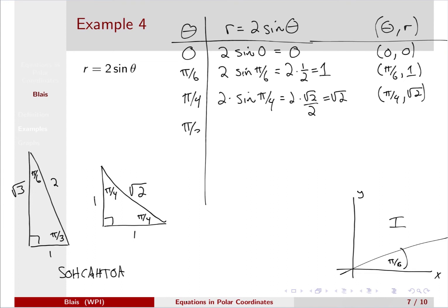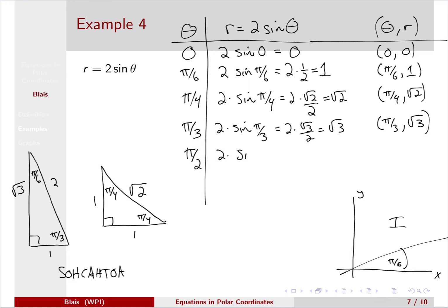For theta equals pi over 2: r is 2 times sine of pi over 2. Sine of pi over 2 is 1, so r equals 2. We now have this list of polar coordinate pairs: (0, 0), (pi/6, 1), (pi/4, root 2), (pi/3, root 3), and (pi/2, 2). We're trying to get an idea of graphically what this might look like, so let's plot these points.